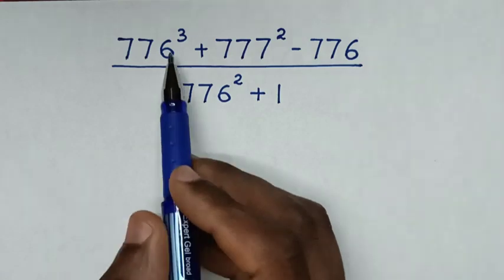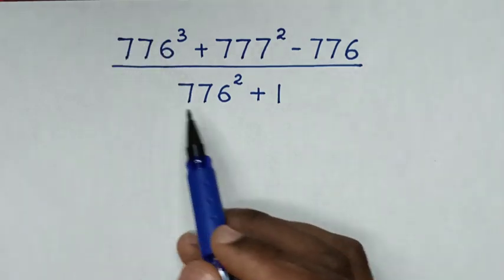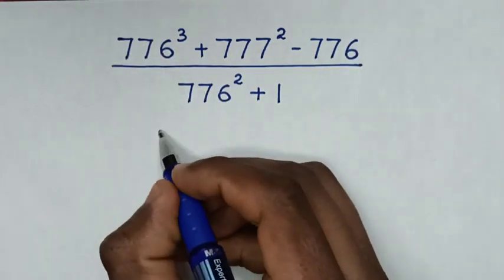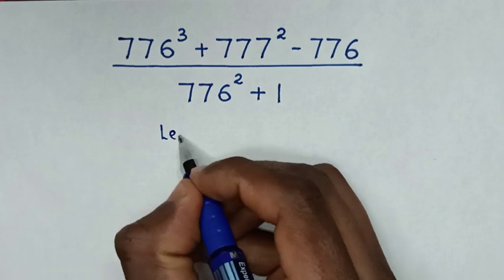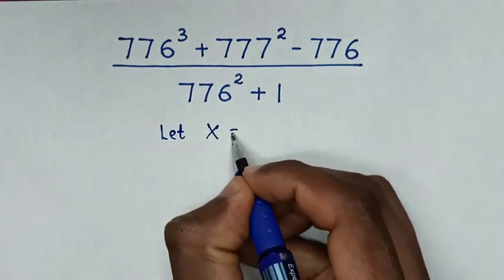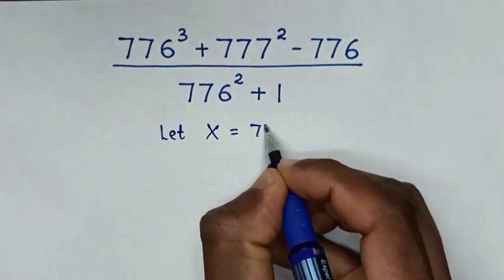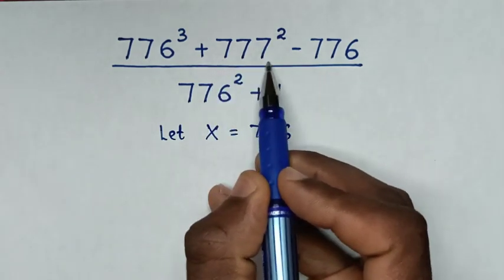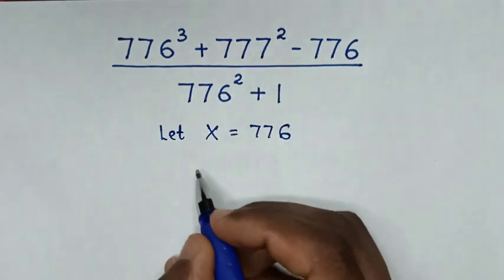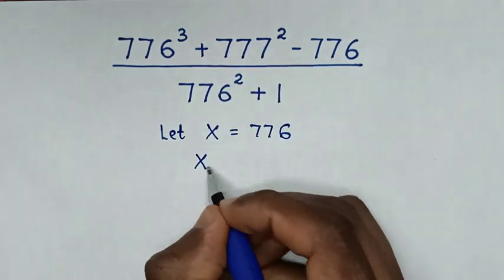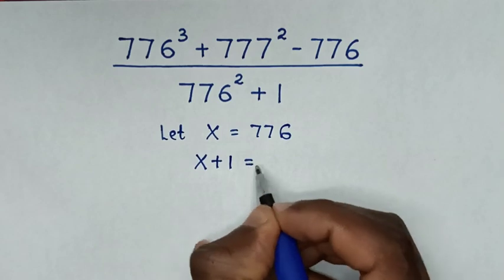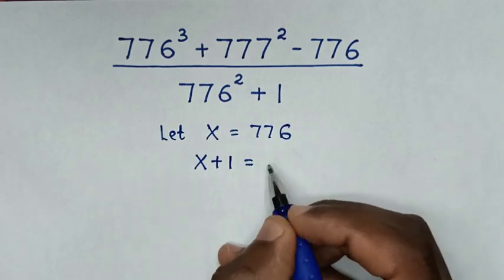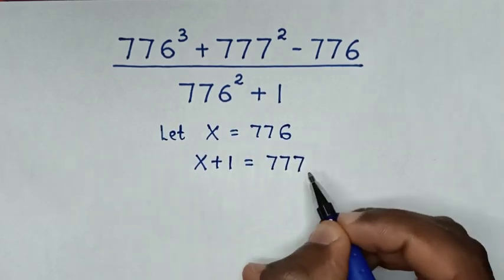In here, 776 is common. Therefore, we let x equal to 776. So 777 will be x plus 1, which is equal to 776 plus 1 equals 777.